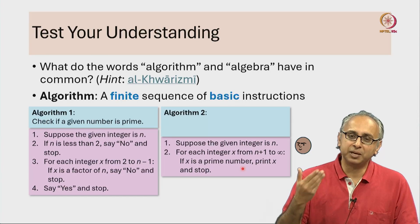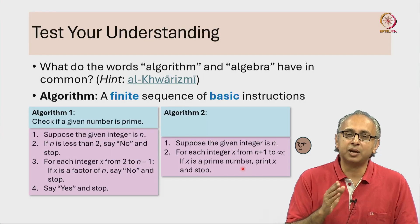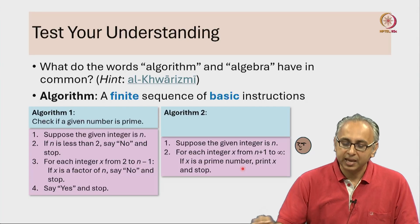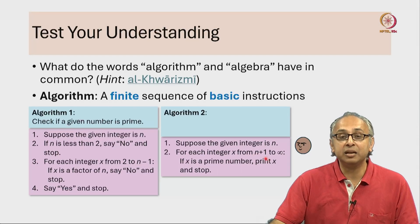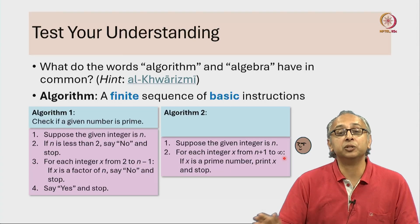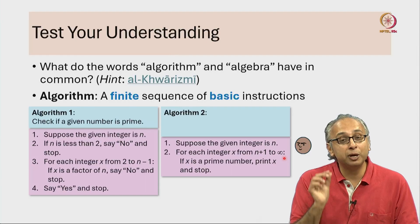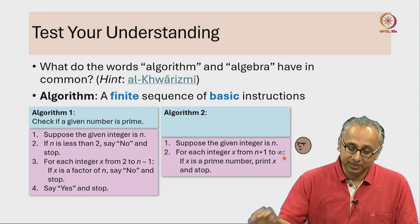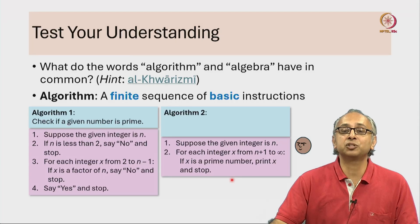Because as many of you know the prime numbers are infinite. So no matter what n I give you as a starting integer, as you scan n plus 1, n plus 2 and so on, eventually you will find an x that is a prime number and then you will print that x and stop.